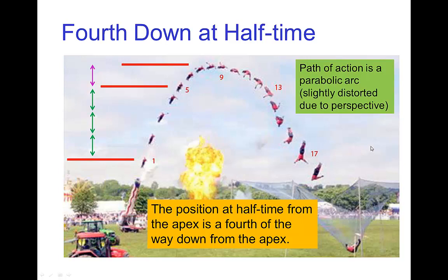We can use some of the other rules like fourth down at half-time. So, here we see this parabolic arc and just going from the apex, so here on frame nine, if we go four frames further, at that position, it's a fourth of the way down compared to going four more frames to seventeen. So, again, this frame here is a fourth of the way down from the apex. On the other hand, we can go on the other side of the arc. So, coming up, over half the time, it's going three quarters of the distance. And then, in the remaining half of the time, coming up to the apex, it's the remaining fourth of the distance.